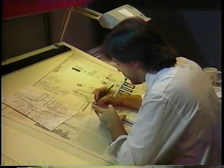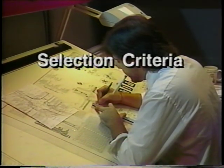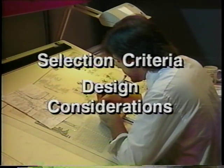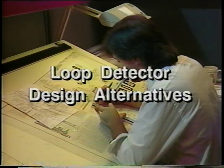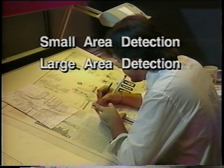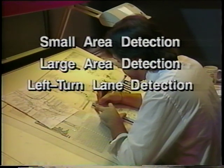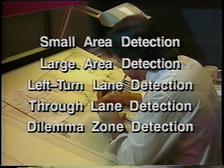During this presentation, we have discussed the selection criteria of detector design as well as the design considerations. Now let's discuss loop detector design alternatives for small area detection, large area detection, left turn lane detection, through lane detection, and dilemma zone detection.